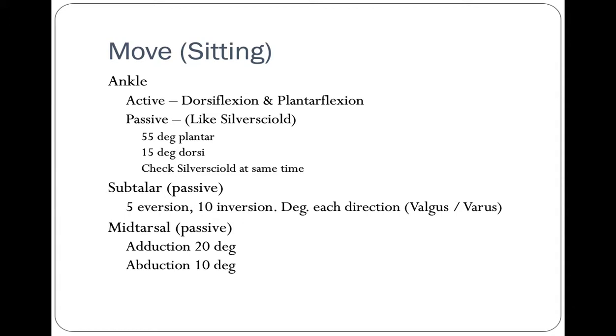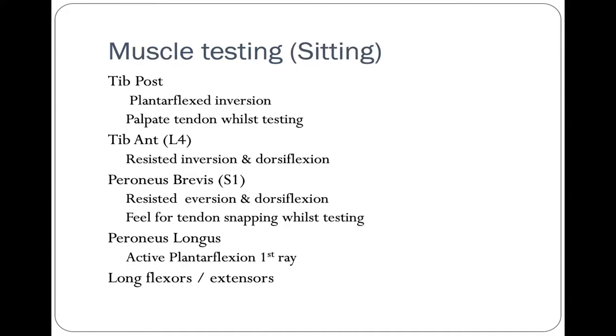The subtalar joint is responsible for inversion and eversion. Inversion being turning the calcaneus in. The main driver of this is the posterior tibial tendon, and the eversion turning the calcaneus out. The main driver of that is the peroneal muscle group. Normal is 5 degrees eversion, 10 degrees inversion, and then ask the patient to turn the toes in and turn the toes out. There is very little more dexterity in the toes that can be tested.